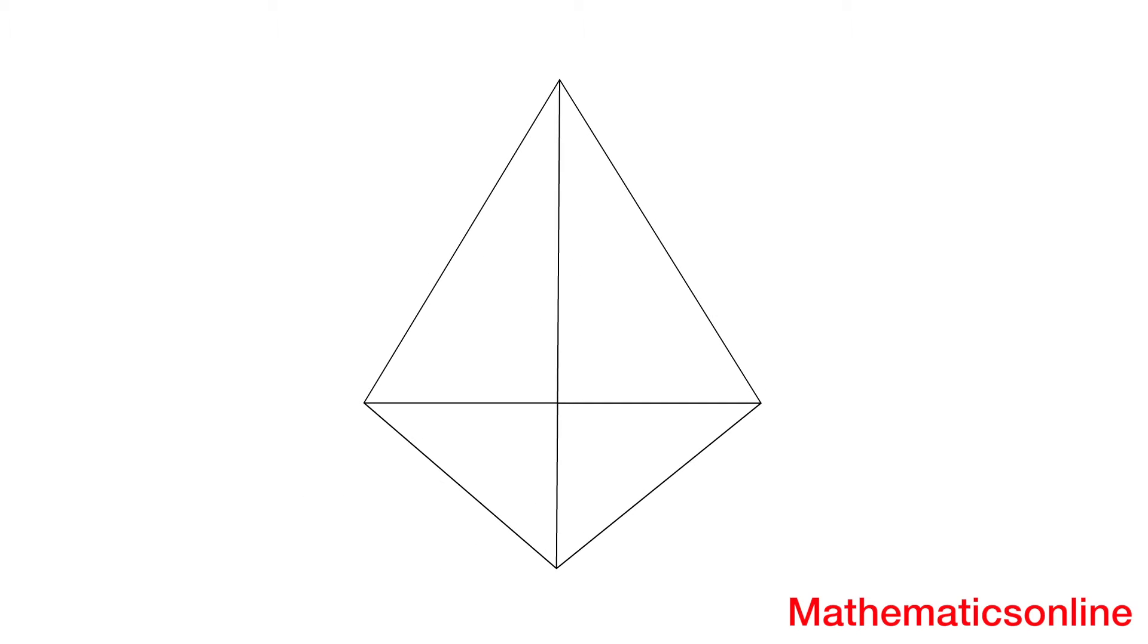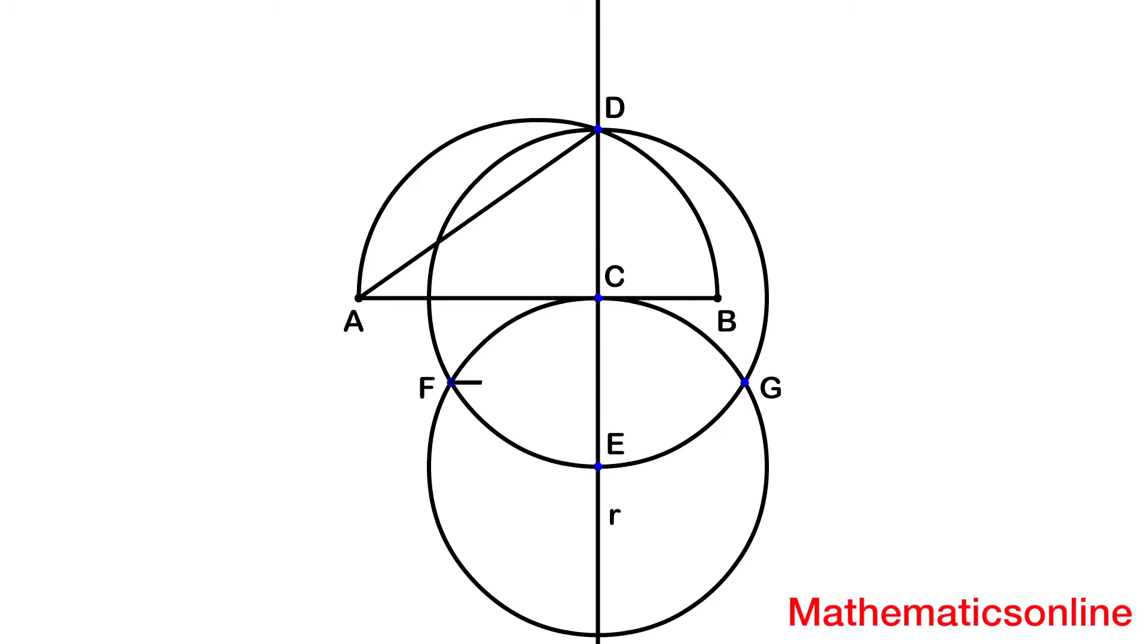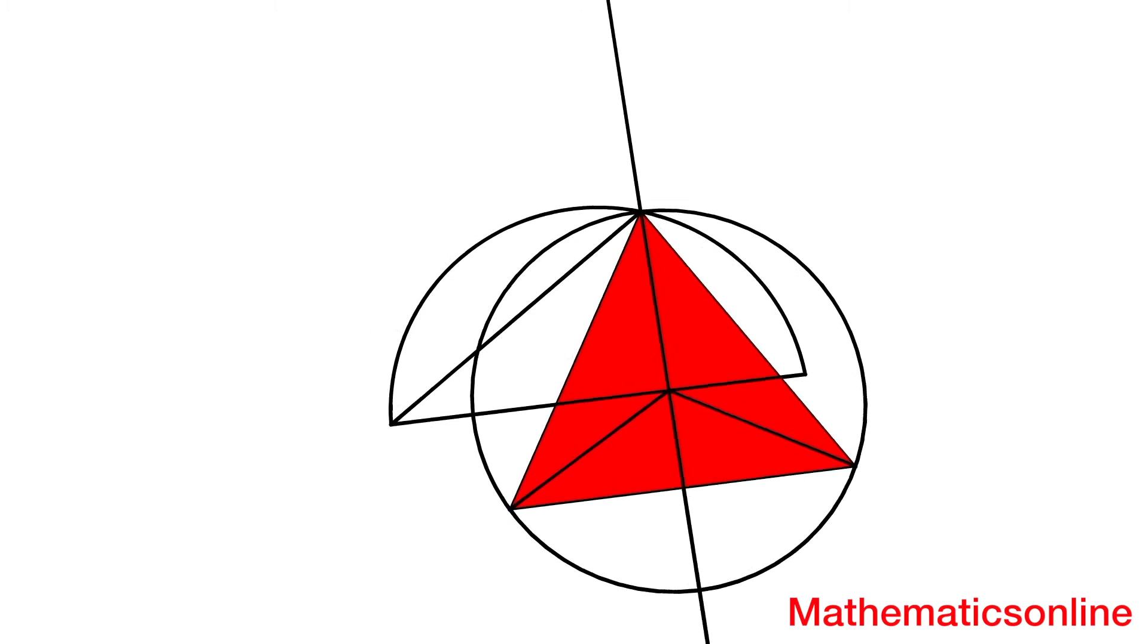But how do we go about doing such a thing? Is it even possible? Well, Euclid published a book more than 2,000 years ago on geometry, and in this book contains the proof of the tetrahedron.